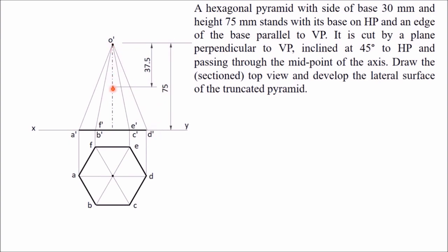The total axis height is 75 mm, so the midpoint is at 37.5 mm. Mark this point and draw a line inclined at 45 degrees — this is the section plane cutting the pyramid. It cuts the slant edges at different points. Mark the point where the section plane cuts slant edge O'A' as 1'.